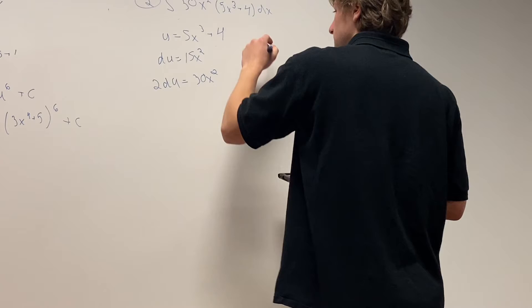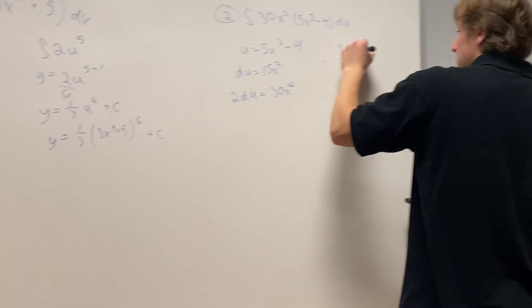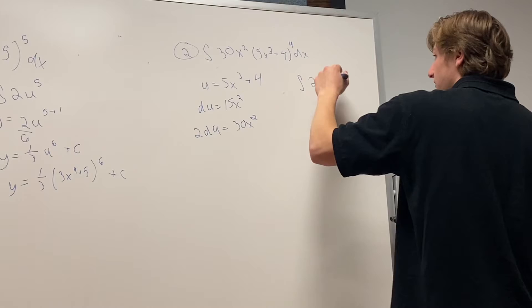Then after that, integral, take your 2u to the 4th. So du, and then 2u to the 4th, that's where you get the 4 from.